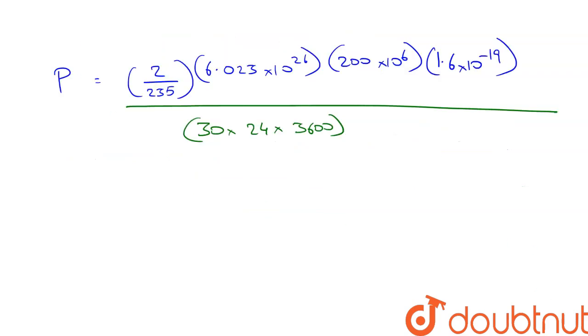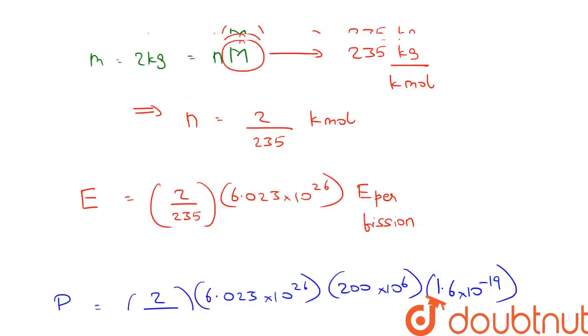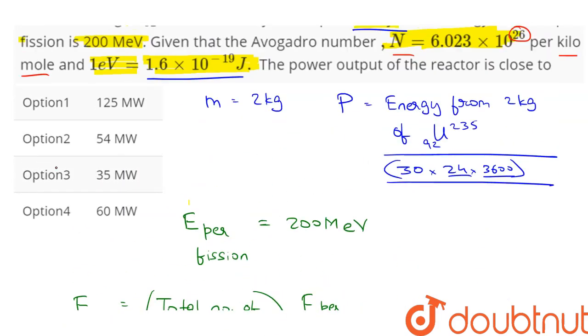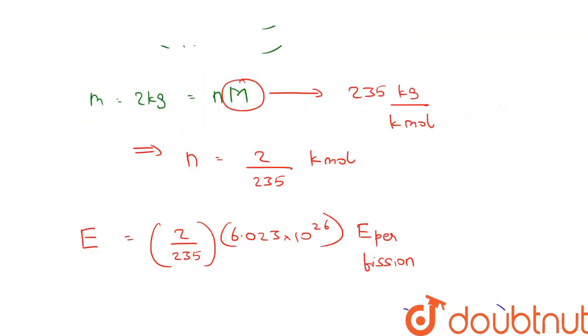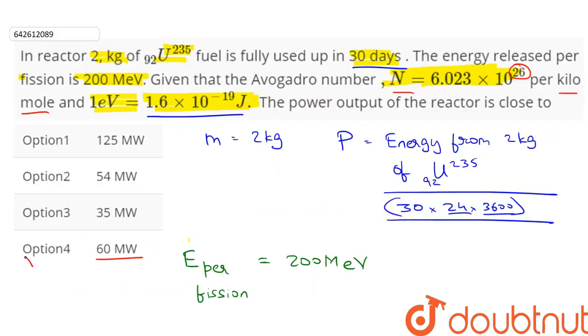Upon calculation, we get the power P is equal to 63.2 megawatt. We don't have 63.2 megawatts in the options, but the closest one is 60 megawatts. So we can say that the power is close to 60 megawatts. Therefore, option 4 is the correct answer.